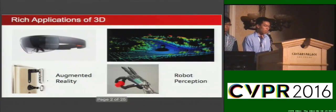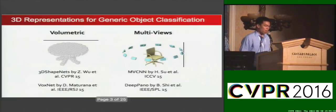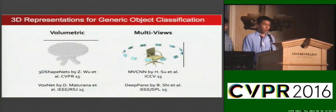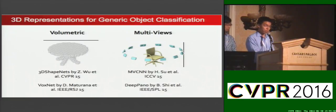It's an exciting moment for 3D. Recently, there's a growing interest to use deep learning on 3D data. However, unlike 2D images that are simply pixel arrays, 3D data has multiple representations, such as volumetric grids and multi-view images.